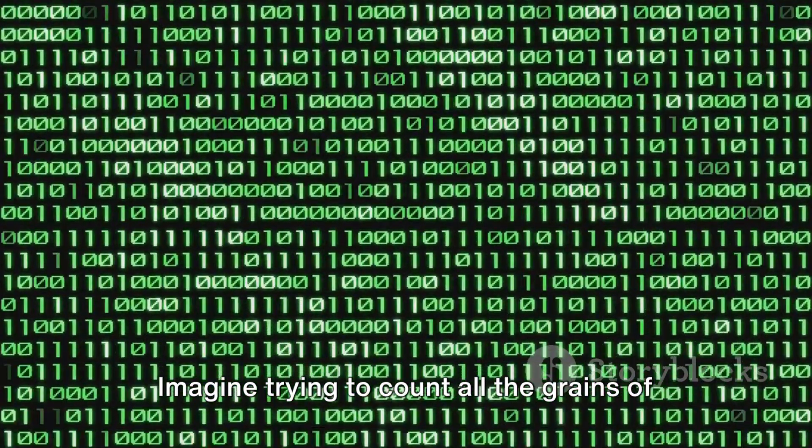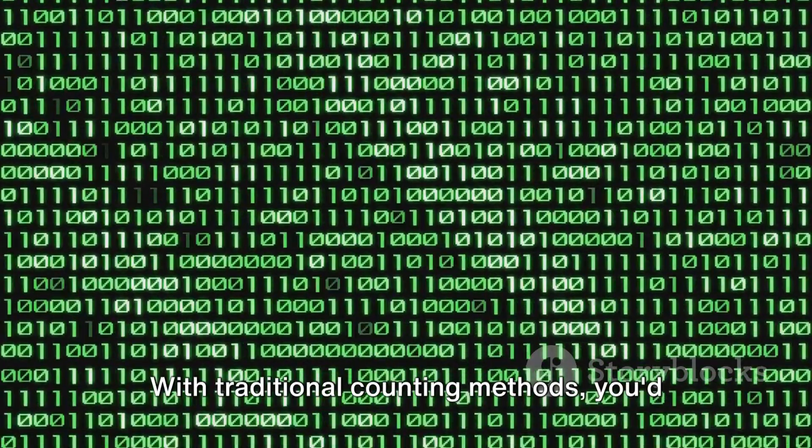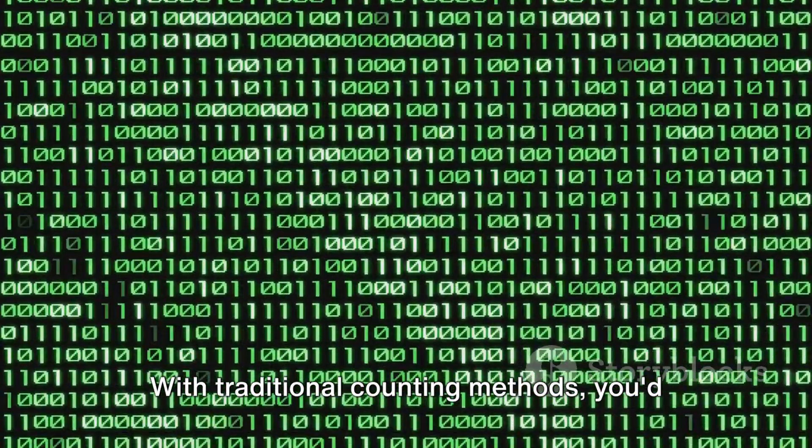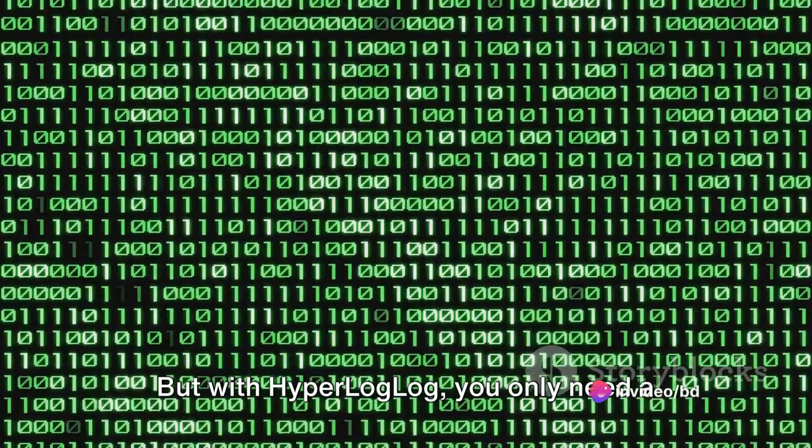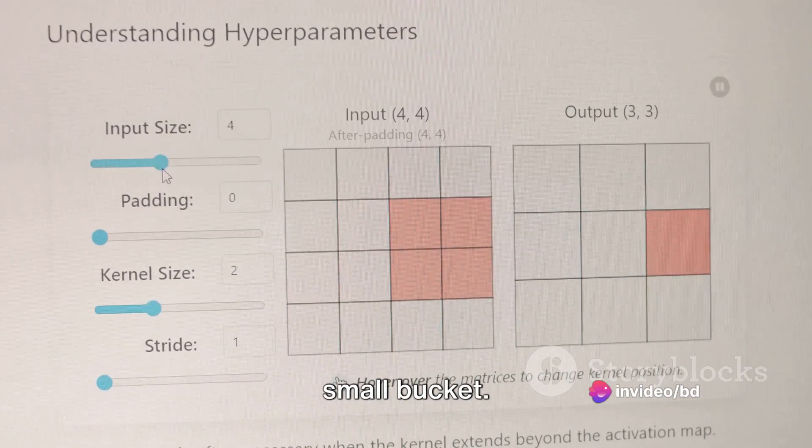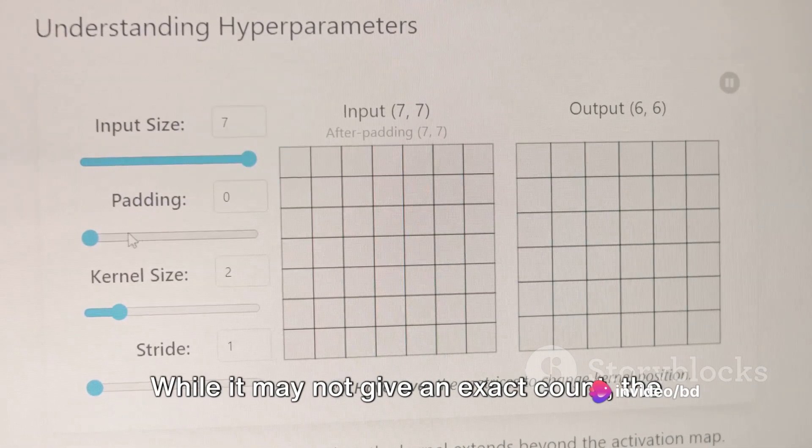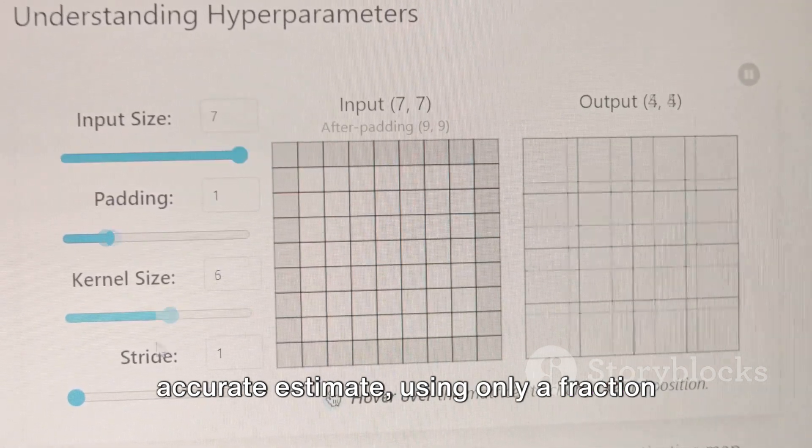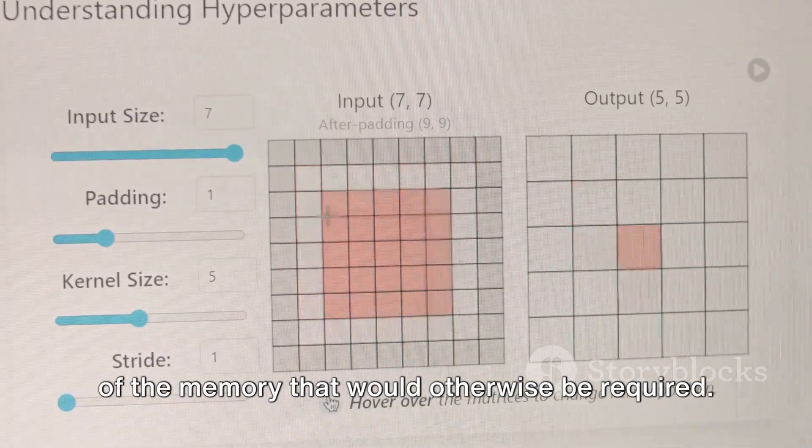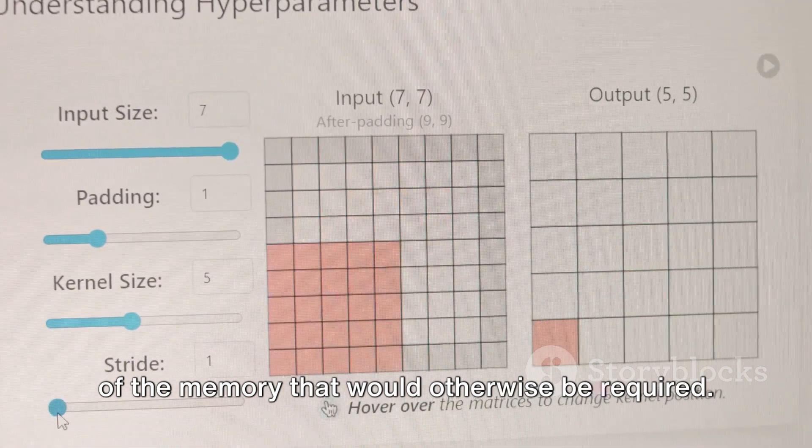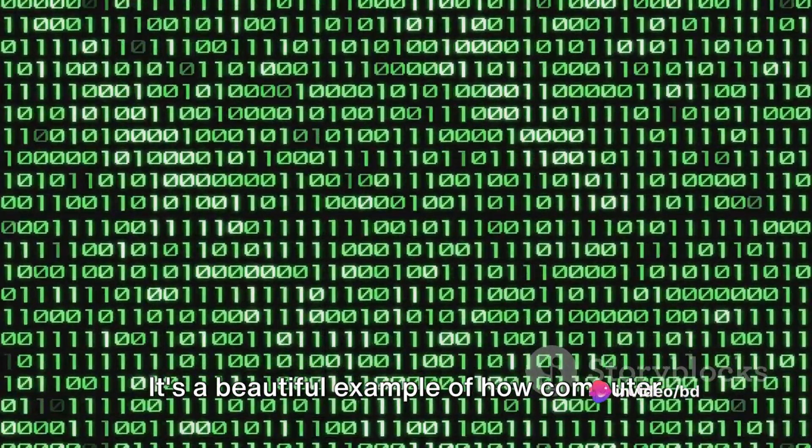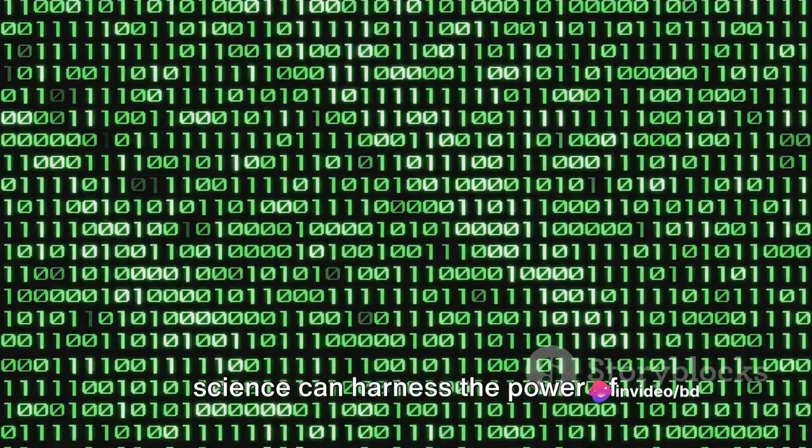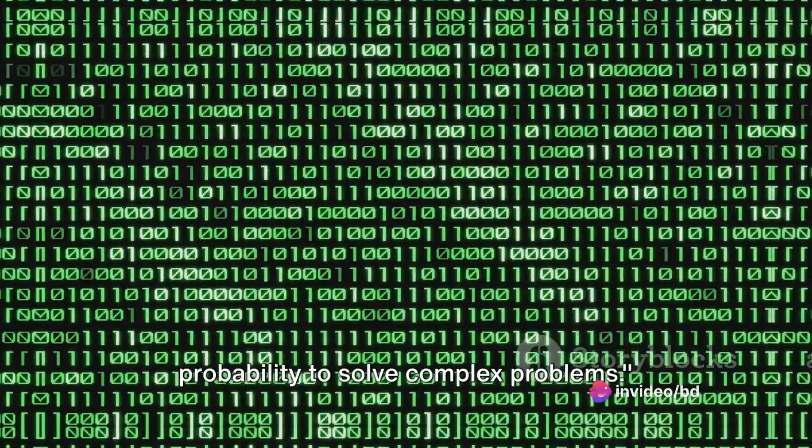This memory efficiency is a real game changer when dealing with big data. Imagine trying to count all the grains of sand on a beach. With traditional counting methods, you'd need an enormous amount of memory. But with hyperloglog, you only need a small bucket. While it may not give an exact count, the hyperloglog algorithm provides a highly accurate estimate using only a fraction of the memory that would otherwise be required. It's a beautiful example of how computer science can harness the power of probability to solve complex problems.